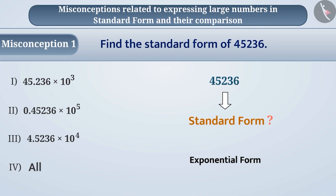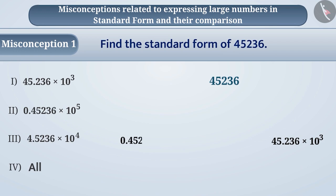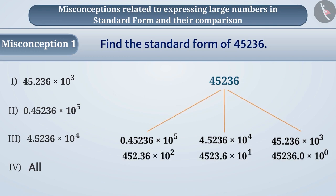They consider any exponential form to be the standard form of a number. With this knowledge, they believe these forms: 45.236 × 10³, 0.45236 × 10⁵, and 4.5236 × 10⁴ to be the standard form of the given number and choose option 4, which is a wrong answer.